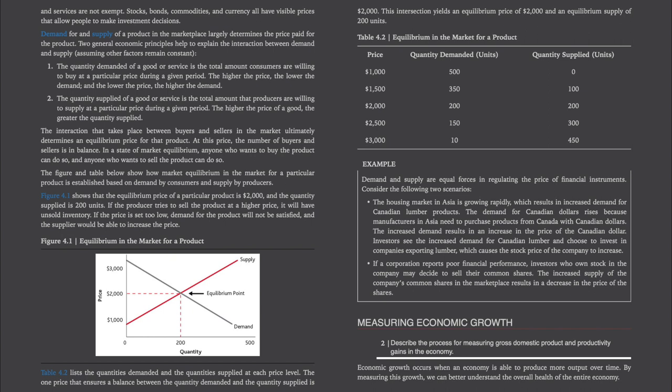Two general economic principles help to explain the interaction between demand and supply, assuming other factors remain constant. One, the quantity demanded of a good or service is the total amount consumers are willing to buy at a particular price during a given period. The higher the price, the lower the demand. And the lower the price, the higher the demand. The quantity supplied of a good or service is the total amount that producers are willing to supply at a particular price during a given period. The higher the price of a good, the greater the quantity supplied.